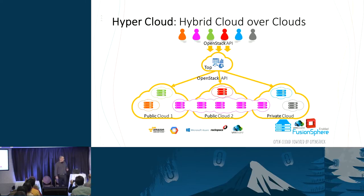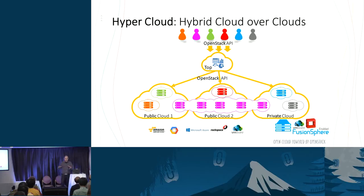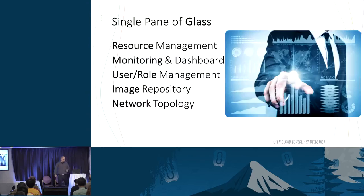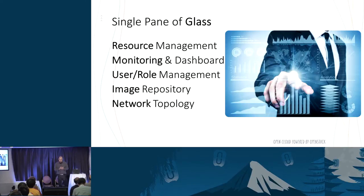Basically you have some top management OpenStack API where the tenants are working, and on the bottom you have multiple public clouds, maybe private clouds as well. Some resources reside in a specific cloud, some resources extend across different clouds. First, there's a single pane of glass — one resource management, monitoring and dashboard from one place, user role management in one place, image repository, and network topology.